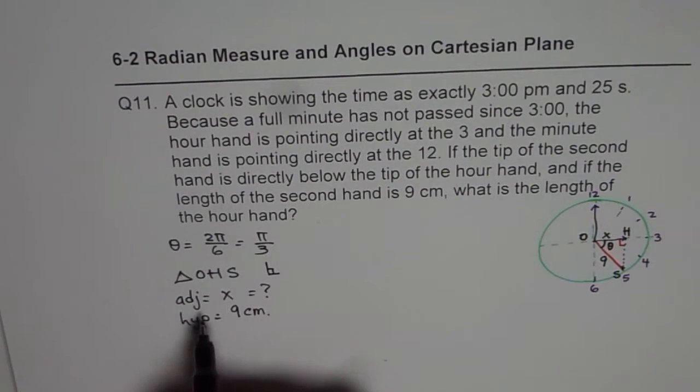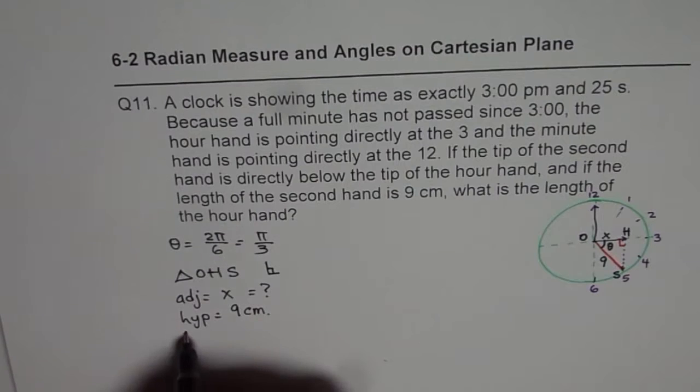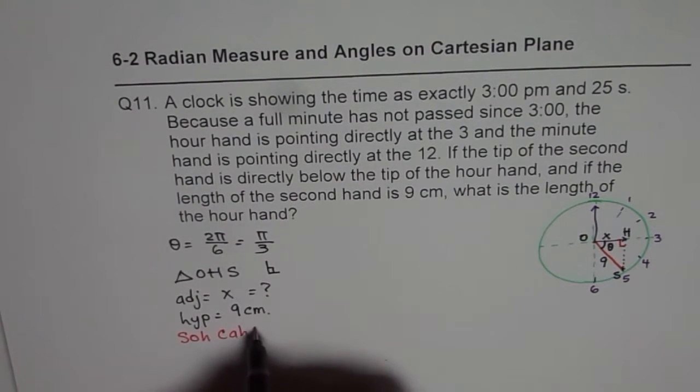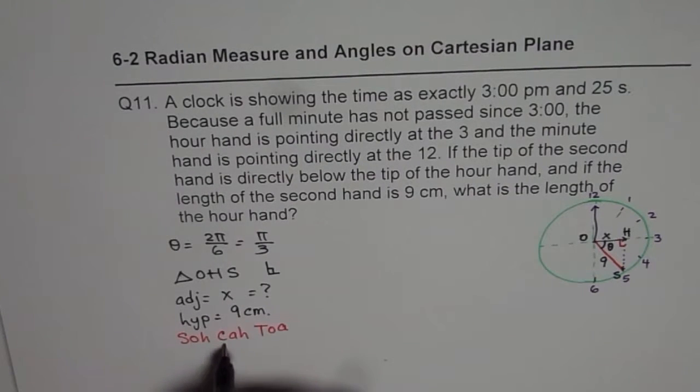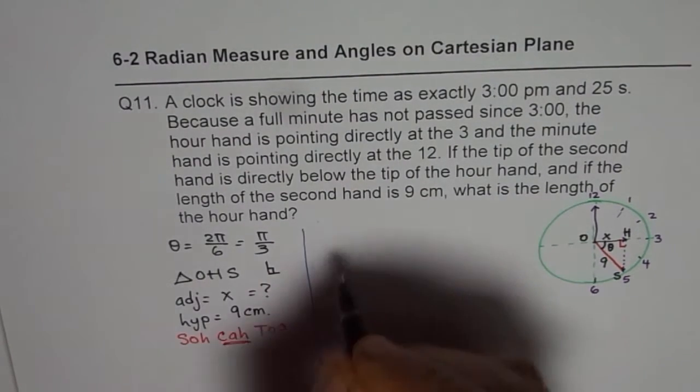Since we know adjacent and the hypotenuse, remember SOHCAHTOA. I am writing it again and again so that you remember this. Adjacent and hypotenuse means that we have to use cosine. So let me use this part of the page.